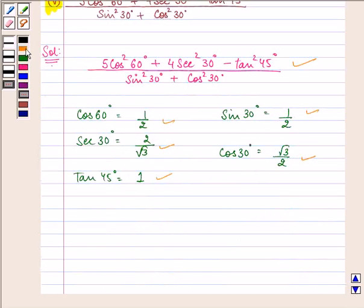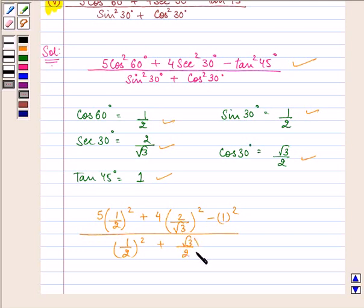On doing so we have 5 into cos square 60 degree will be half square plus 4 times 2 by root 3 the whole square minus 1 the whole square upon 1 by 2 the whole square plus root 3 by 2 the whole square.